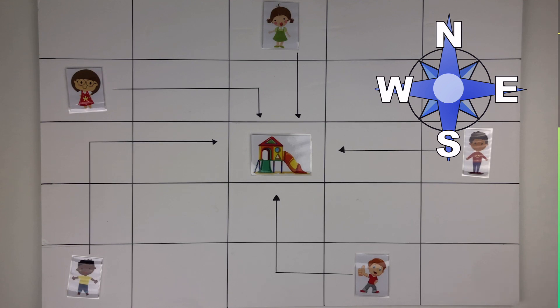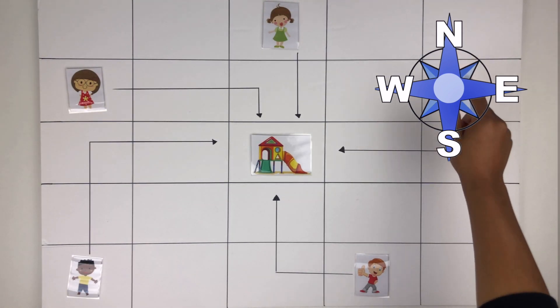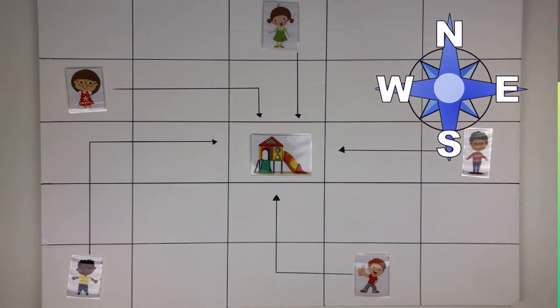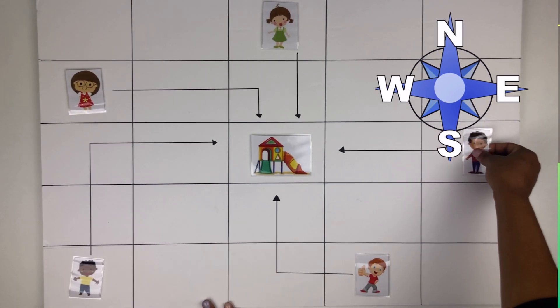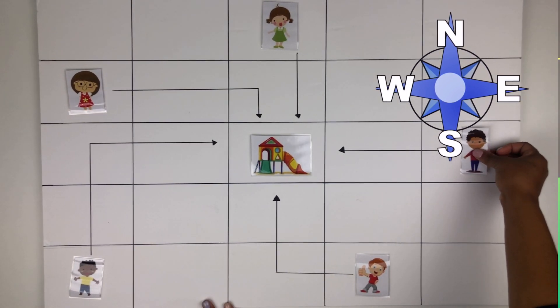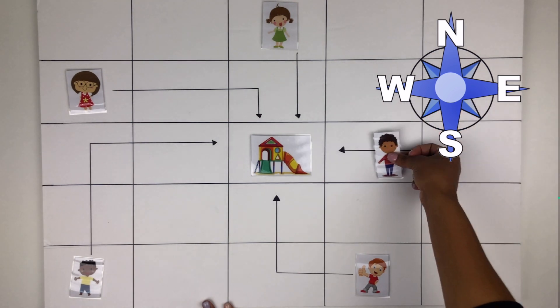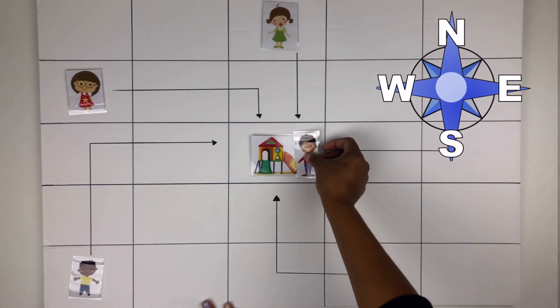All righty, can you help my friends get to the park using our cardinal directions? Great! Let's start with John. John has to take two steps west to get to the park. Good.